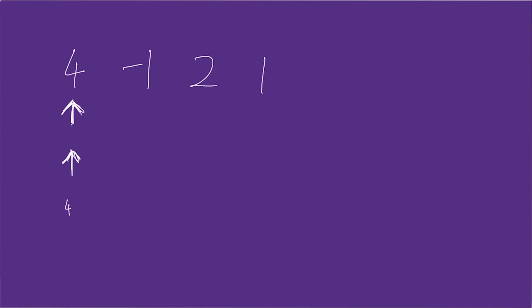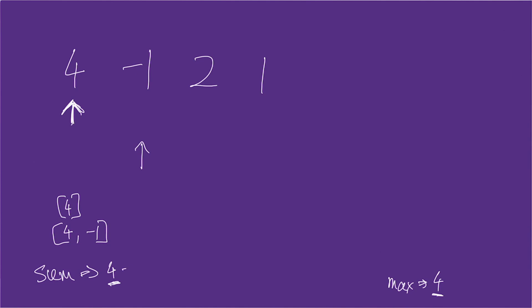We track the sum of the current subarray in a variable called 'sum', initialized to the first element (four). We also have a variable 'max' to track the maximum subarray sum seen so far, also initialized to four. Our first subarray is just [4]. Moving the second loop to minus one, the subarray becomes [4, -1], sum becomes three. Max is larger than three so we don't update.